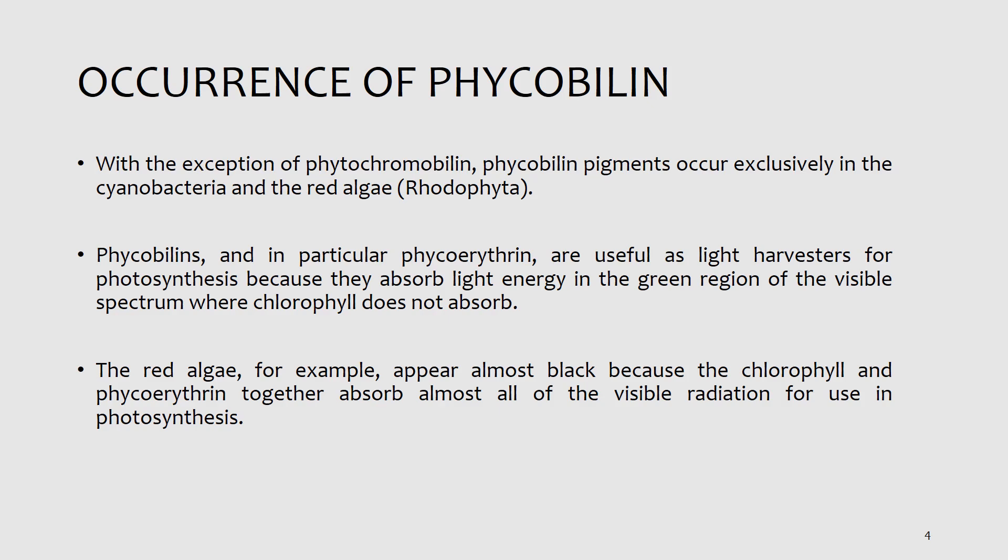The red algae, for example, appears almost black because both chlorophyll and phycocyanin are present. Chlorophyll absorbs in the red and blue regions, while phycocyanin covers the region that chlorophyll does not absorb. So you can say that the whole spectrum of electromagnetic radiation is absorbed. When a material absorbs all electromagnetic radiation and none is transmitted back, it will appear black in color. That is why red algae look black in appearance.